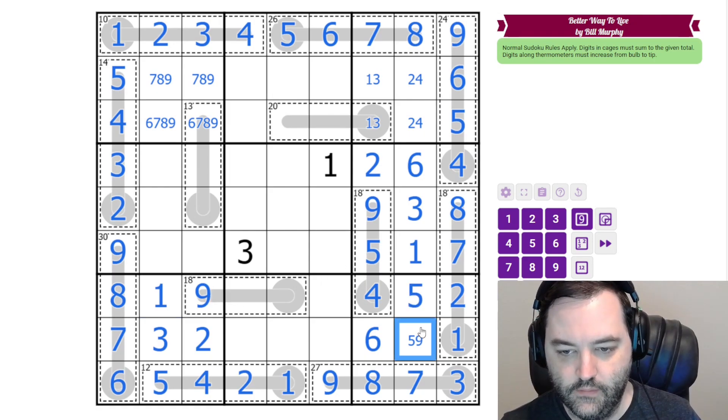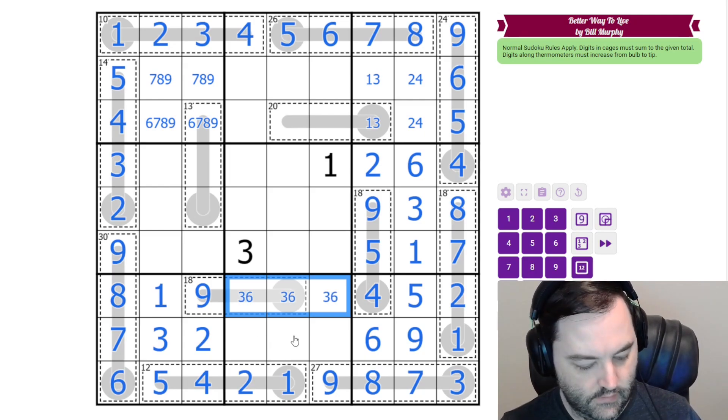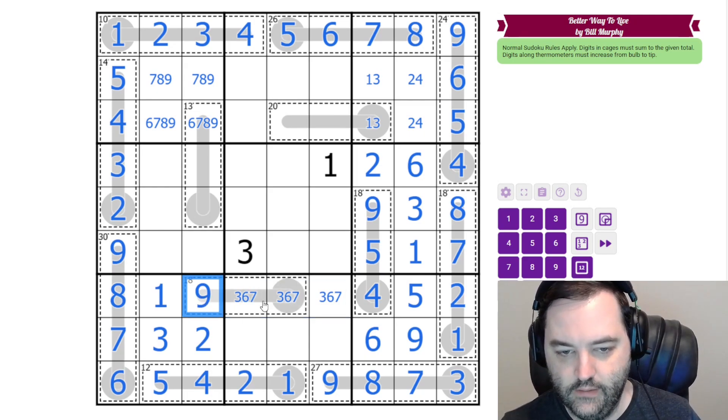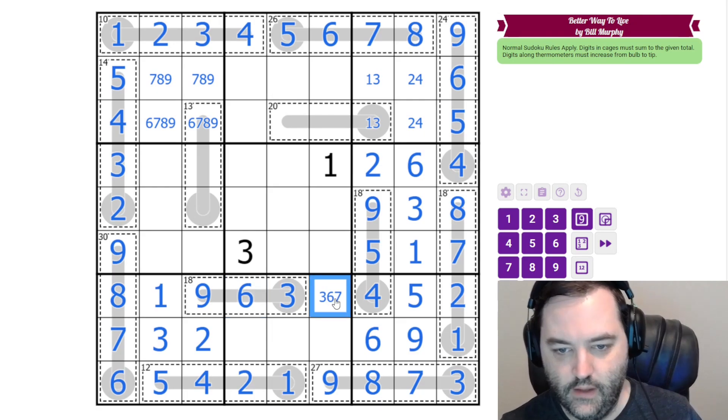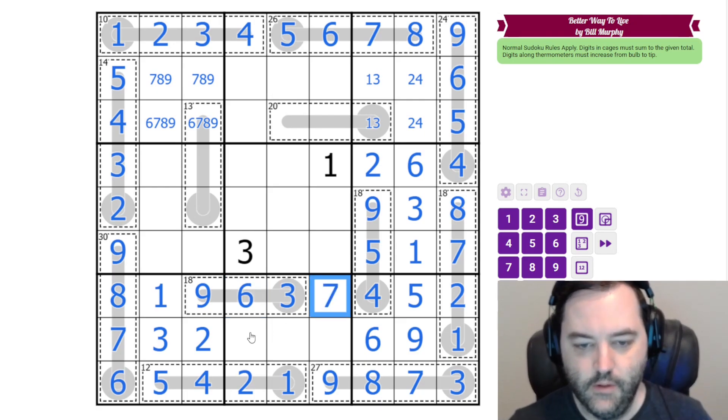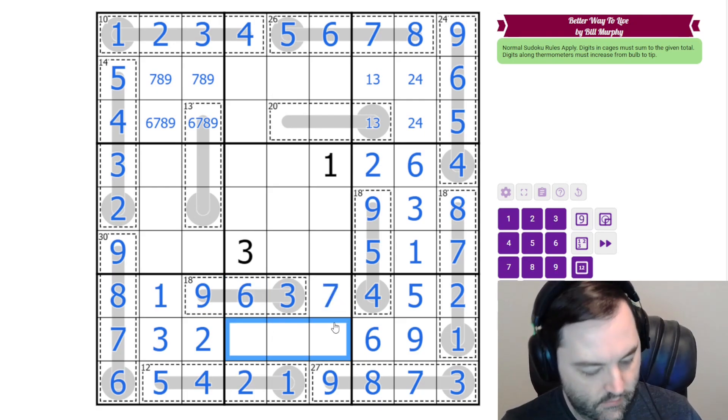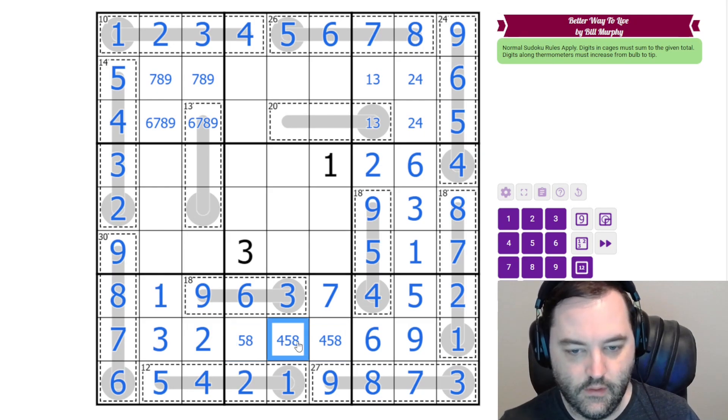The nine here makes this five and nine. And we are left with three, six, and seven. In order to make 18, we need these to sum to nine. So this has to be three, six in that order. Seven there. And then we have four, five, and eight. This is not four. This is not five.